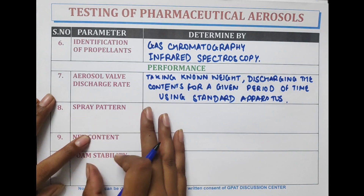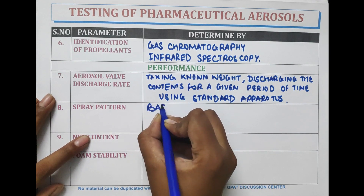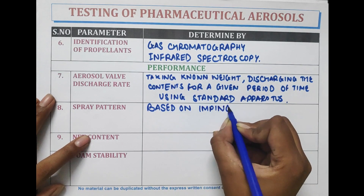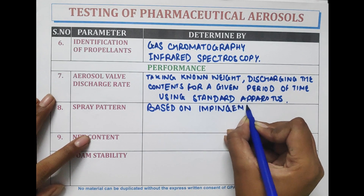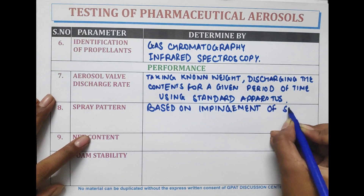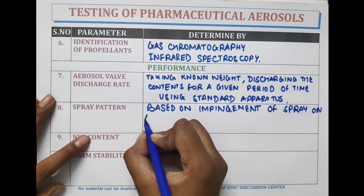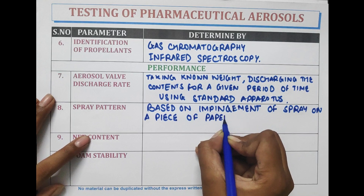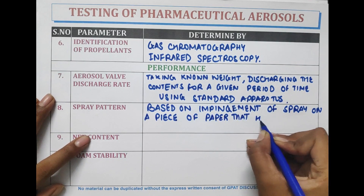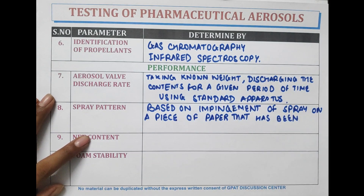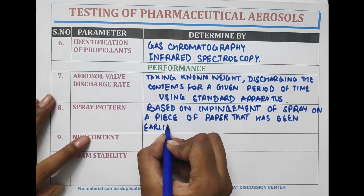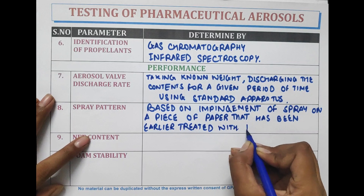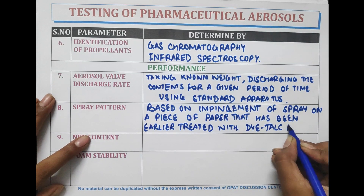Spray pattern is based on the impingement of spray on a piece of paper that has been earlier treated with a dye-talc mixture. In spray pattern evaluation, a paper is treated with a dye-talc mixture and the aerosol is sprayed onto this paper to study the spray pattern.